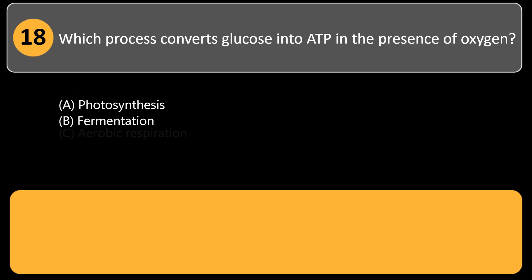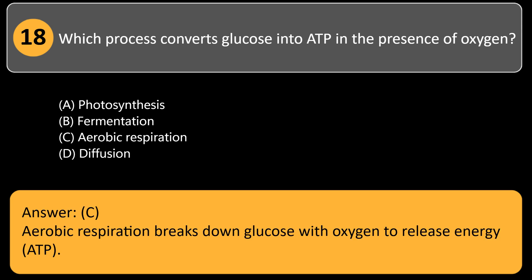Which process converts glucose into ATP in the presence of oxygen? A. Photosynthesis, B. Fermentation, C. Aerobic respiration, D. Diffusion. Answer: C. Aerobic respiration breaks down glucose with oxygen to release energy, ATP.